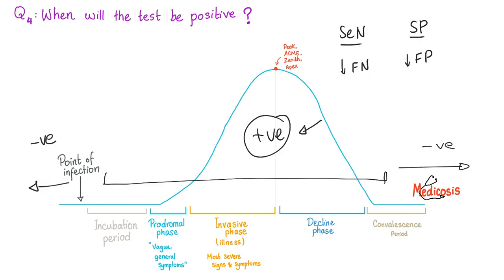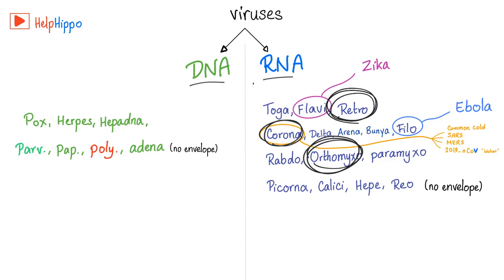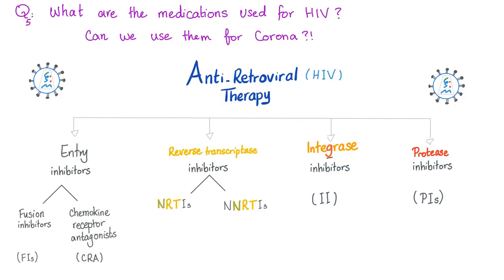Don't forget that viruses are either DNA viruses or RNA viruses. Coronaviruses are RNA. Orthomyxoviruses, which include influenza, are also RNA. Retroviruses, including HIV, are also RNA. So the theory is: if we can use drugs that treat HIV or influenza, maybe we can try them for coronavirus — maybe they will work. What are the medications used for HIV, and can we use them for coronavirus?